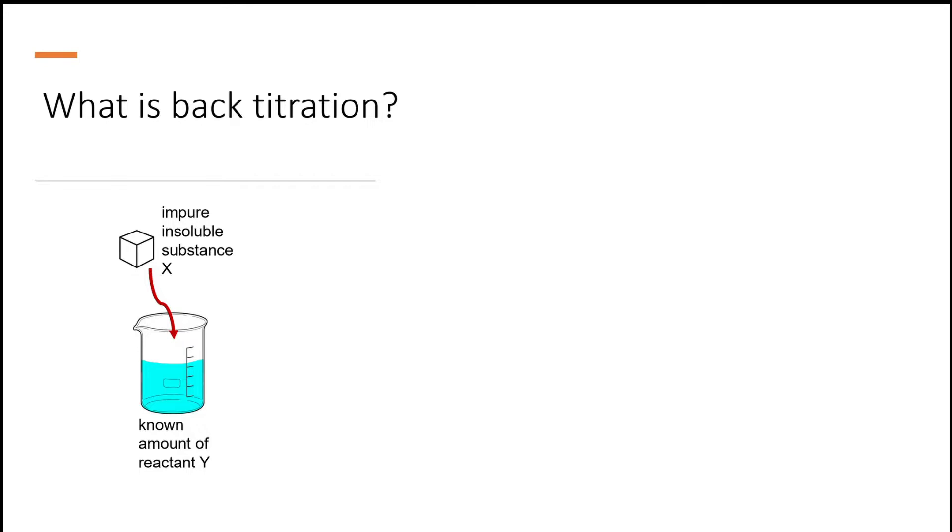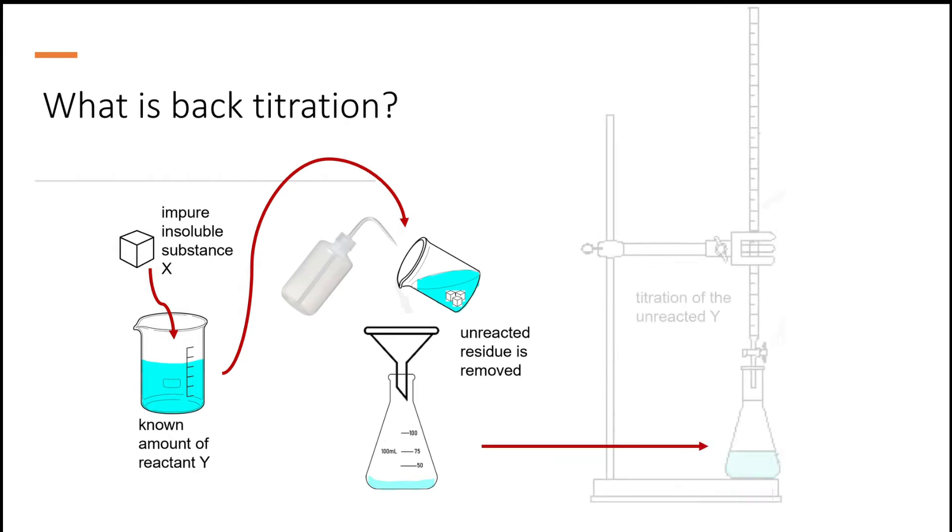Once the reacted residue is filtered off, the remaining excess reagent is then titrated with another second reagent. The second titration's result shows how much of the excess reagent was used in the first titration, thus allowing the original analyte's concentration to be calculated.